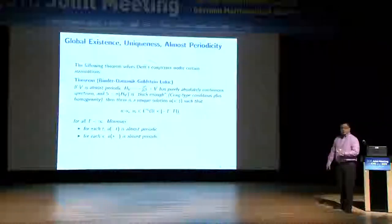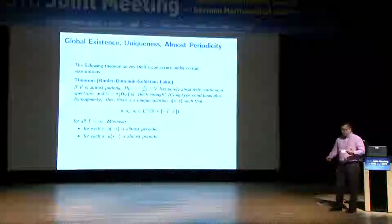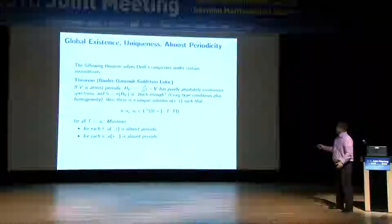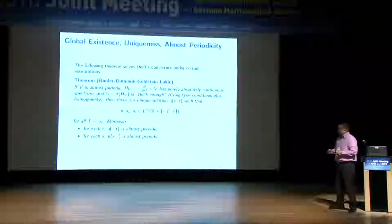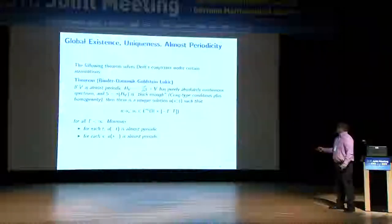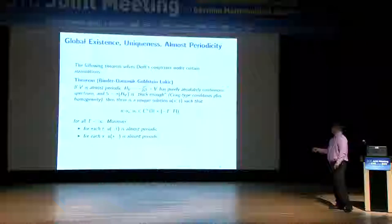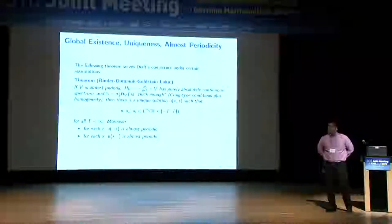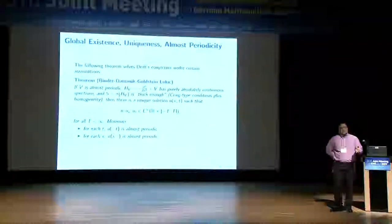We can verify all statements of the Deift conjecture under suitable spectral assumptions about the operator associated with the initial datum V. We also get a new uniqueness statement: the solution whose existence we prove is unique among all solutions that have a certain boundedness property — uniform in X but not uniform in T, allowing a different upper bound on the L-infinity norm of the solution and its derivatives for each T.